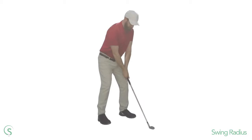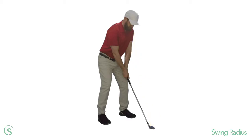So what do I mean by swing radius? Well in this context I mean the distance between the club head and the left shoulder. This is determined by a couple of things. Firstly the length of the left arm and of the club you're holding. So if you have long arms and you're holding a driver you're going to have a larger swing radius than someone with shorter arms holding a wedge, for example.